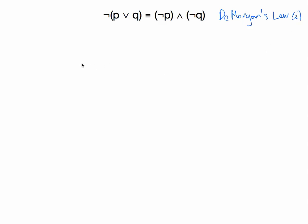The way we can use truth tables to decide whether the left side is logically equivalent to the right is just to make a truth table for each one and see if it works out the same. Both of these statements involve only two small statements, so we're going to need a column for P and a column for Q, and then just four rows — alternating true/true, true/false, false/true, false/false. We'll make a truth table for the left-hand side and the right-hand side, and see if they give us the same results in all the same conditions.